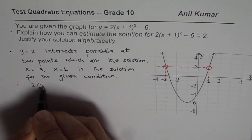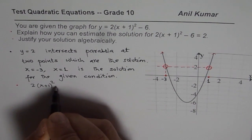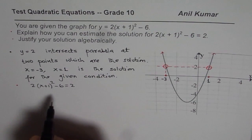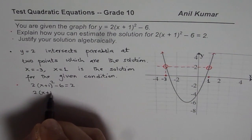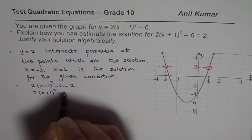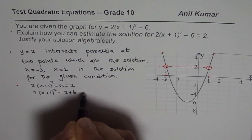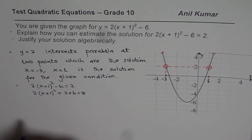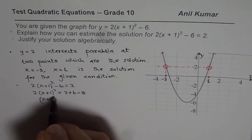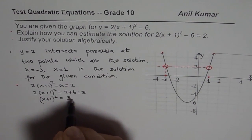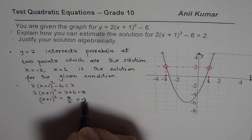So let me try to do it here. 2(x + 1)² - 6 = 2. We will take 6 to the right side. So we get 2(x + 1)² = 2 + 6, which is 8. And now you can divide by 2. So when you divide by 2, you get (x + 1)² = 8 divided by 2, which is 4.